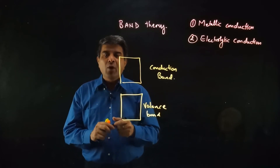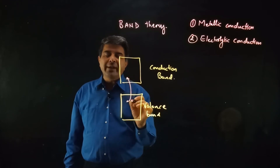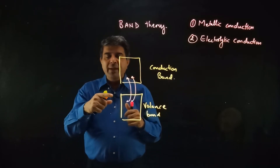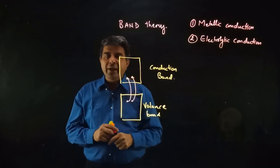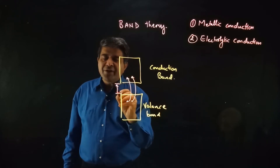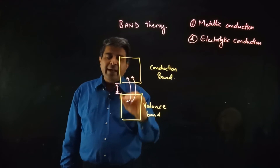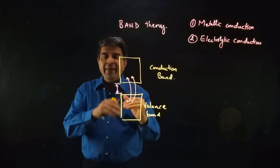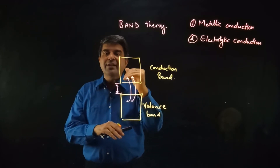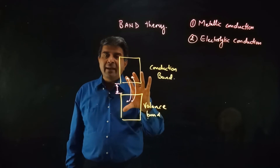For a metal to conduct electricity or heat, electrons from the valence band must jump to the conduction band. If this electronic transition is easily possible, the metal behaves as a good conductor. The energy difference between the bands determines conductivity — if this energy gap is lesser, the electronic transition is much easier and conduction is very easy because the energy required is less.